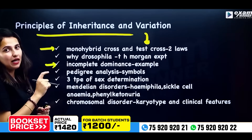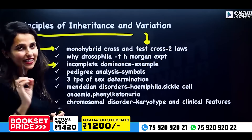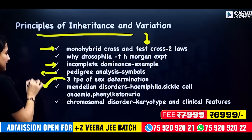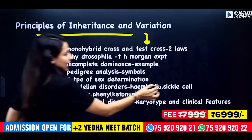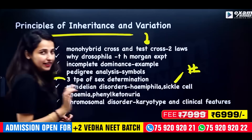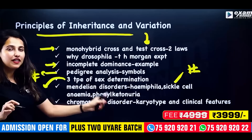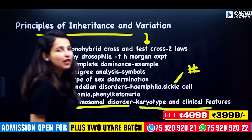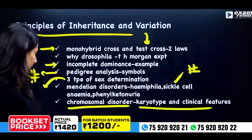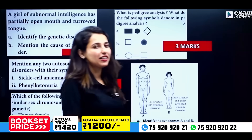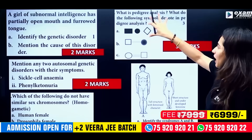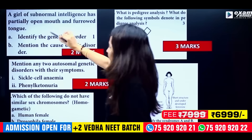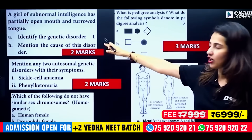Incomplete dominance with example. Pedigree analysis — symbols. Three types of sex determination — very important. Mendelian disorders: anemia, phenylketonuria. Then chromosomal disorders.